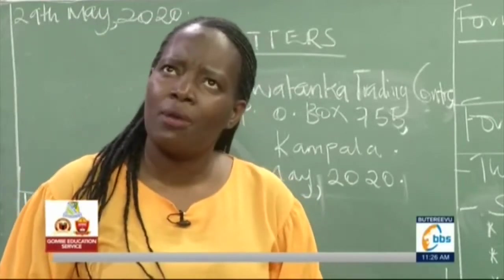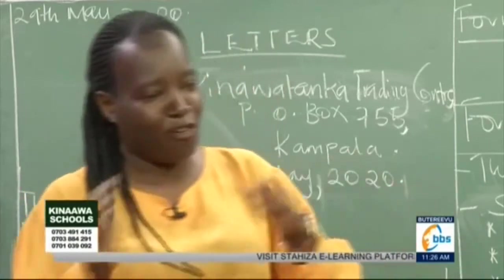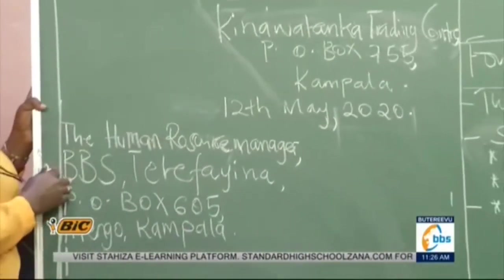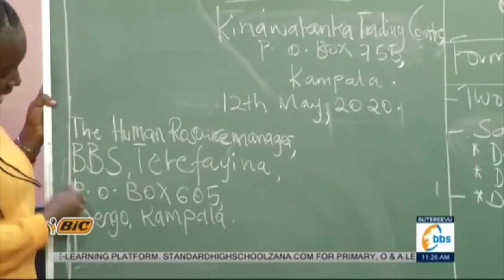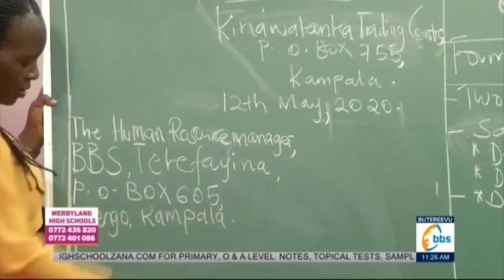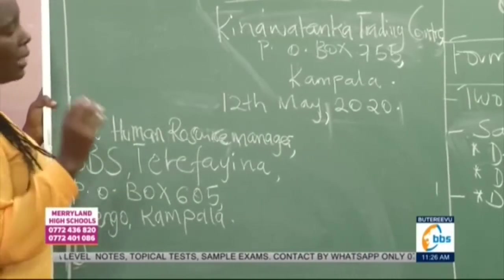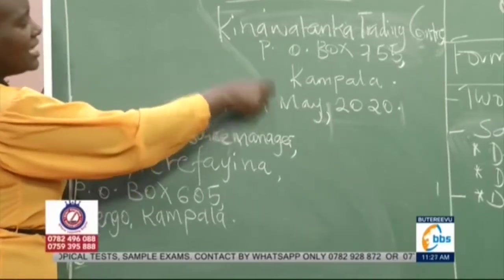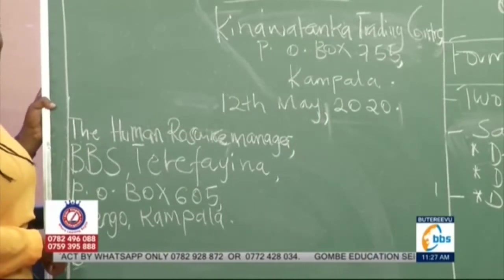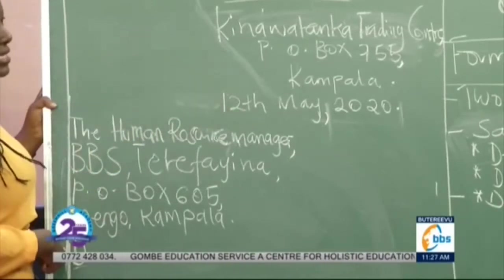The punctuation marks continue when it comes to the addressee's address - you've seen how I put my commas carefully, and when it came to Kampala, I put a full stop. The receiver's address is not slanting - it is block. It is only the writer's address that is slanting. But you've also realized that I've used the lowercase, apart from the main words. For example, 'Human Resource Manager' - Manager here is supposed to be capital M, the H is capital, the R for Resource is capital, the M for Manager is capital. BBS is written in capital letters because it is an abbreviation.